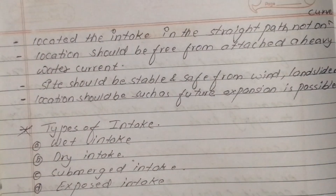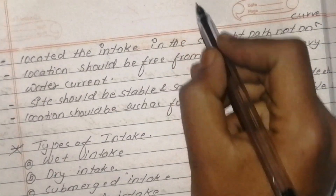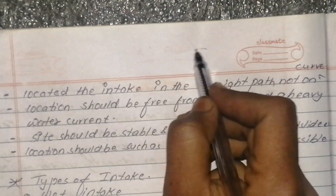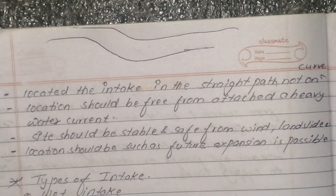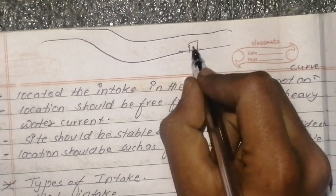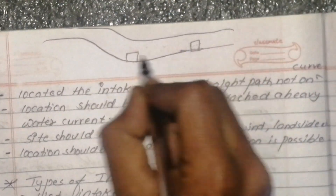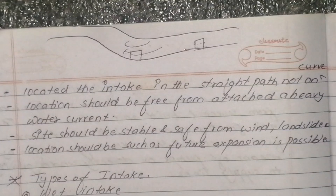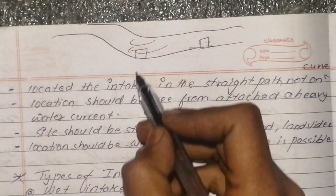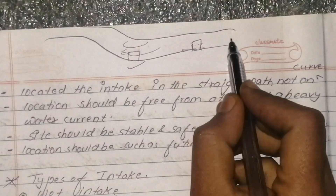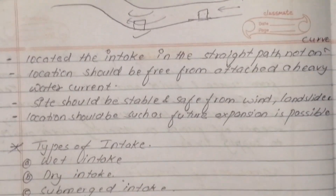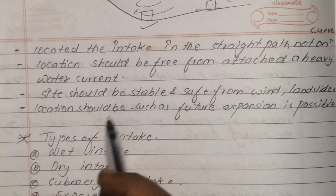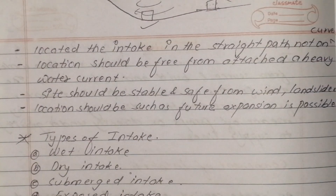Locate the intake in a straight path of the river, not on a curve or bend, because the intake velocity is very high at the curved portion. The location should be free from adverse water currents.